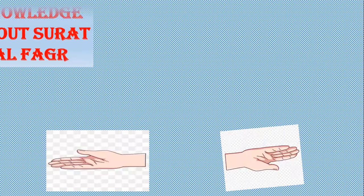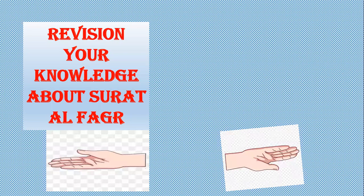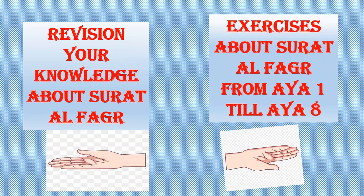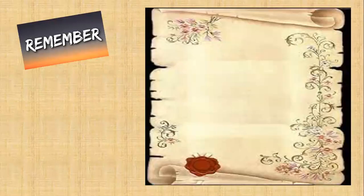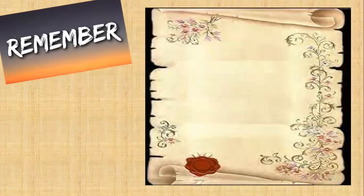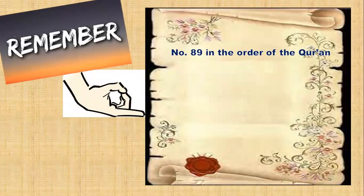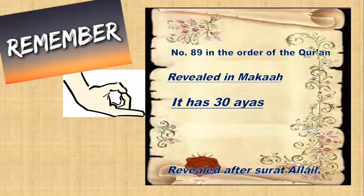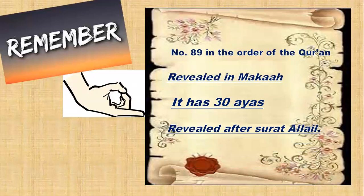This video has two parts. The first part is revision — revision about your knowledge about Surah Al-Fajr. The second part is exercises about Surah Al-Fajr from ayah 1 till ayah 8. Remember: Surah Al-Fajr is surah number 89 in the order of the Quran, revealed in Mecca. It has 30 ayahs, revealed after Surah Al-Layl.